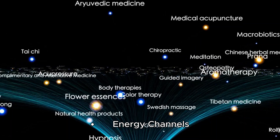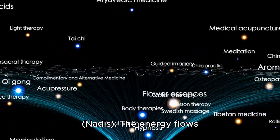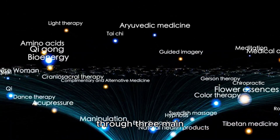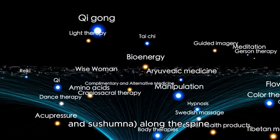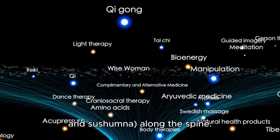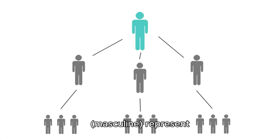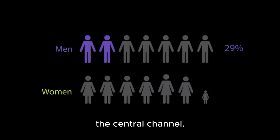Energy Channels — Nadis: The energy flows through three main channels — Ida, Pingala, and Sushumna — along the spine. Ida (Feminine) and Pingala (Masculine) represent duality, while Sushumna is the central channel.